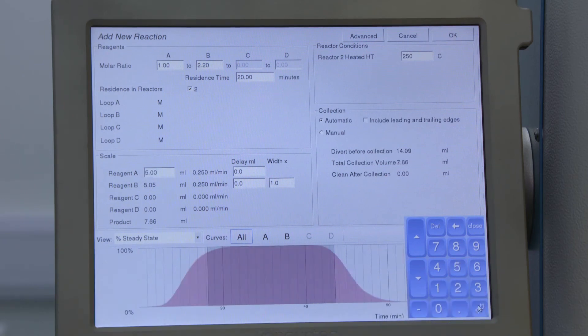Now the shaded region shows me that I have a much larger amount of reagent at steady state, and this is going to be better for my reaction.